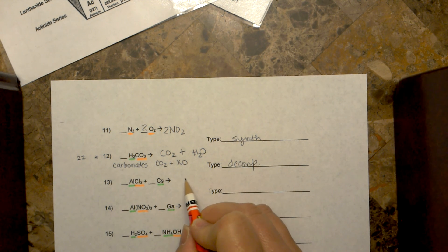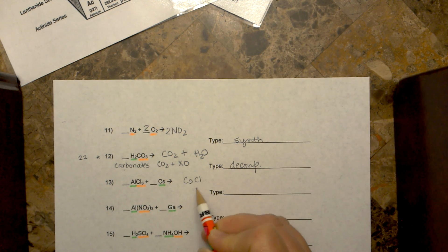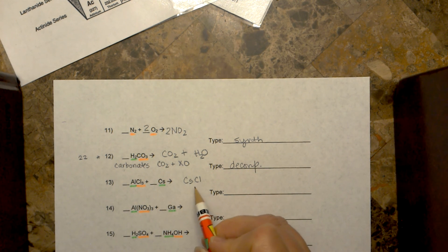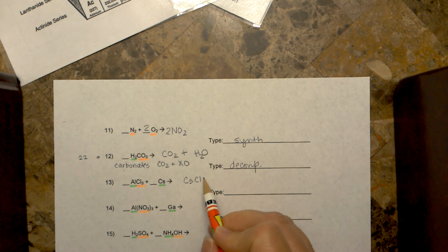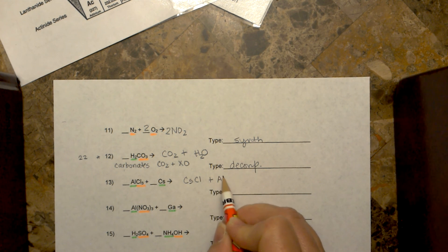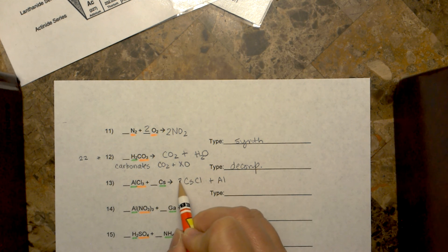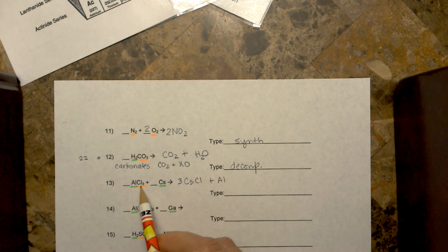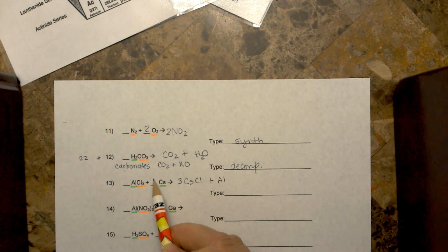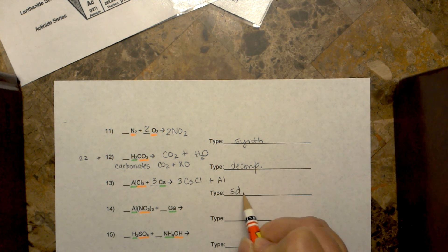This is a single displacement — cesium is going to replace aluminum. So we have cesium chloride. Cesium is a plus one and chlorine is a negative one, so you just need one of each. And you have aluminum left over. But you have to balance this out — so if you put a three in front of the cesium chloride to get your chlorines worked out, you need a three there as well.